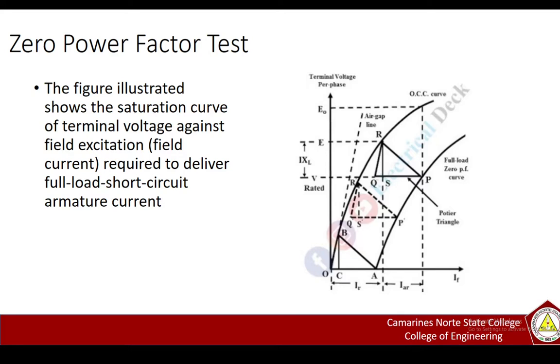In the triangle TQR, the line represents the armature leakage drop, which is IXL.